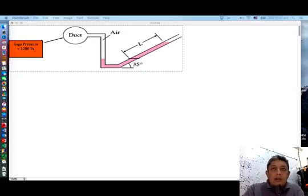On the screen right now is the schematic of the incline manometer where you have a duct or a pipe and it is hooked up to a manometer here and inside this manometer is a fluid.